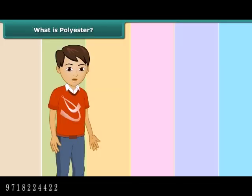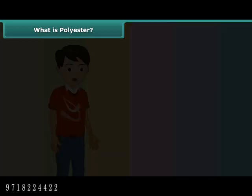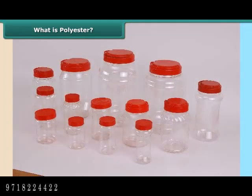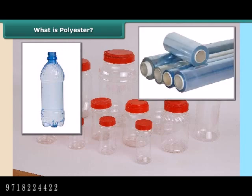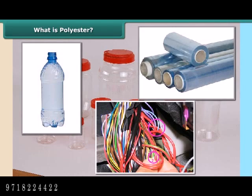PET is a familiar form of polyester — you may have noticed PET jars used for storing rice, sugar, etc. PET is used for making bottles, jars, films, wires, etc.